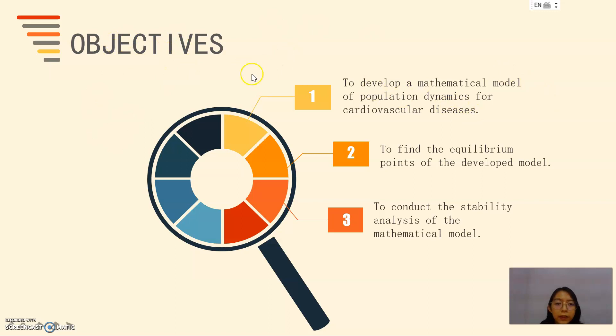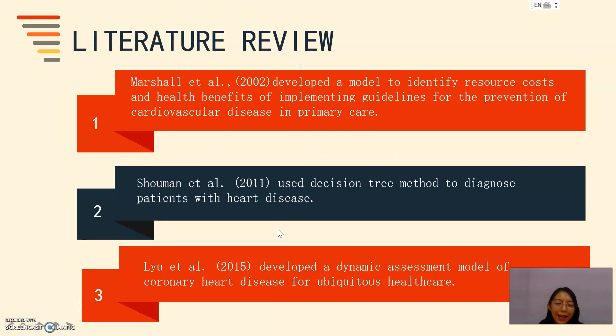There are three objectives in my study. The first one is to develop a mathematical model of population dynamics for cardiovascular disease. The second one is to find the equilibrium point of the developed model. And the third one is to conduct the stability analysis of the mathematical model.